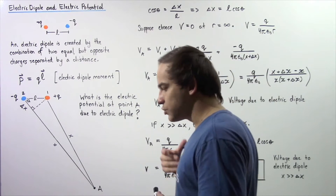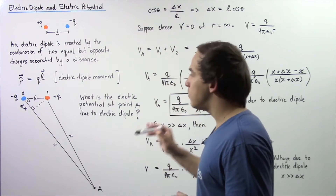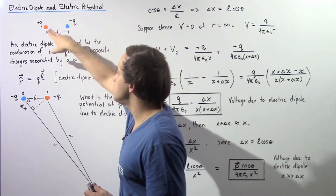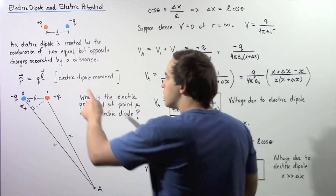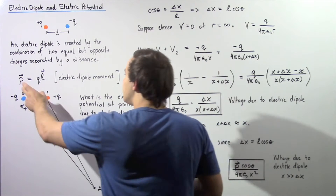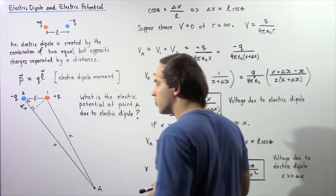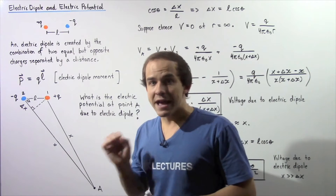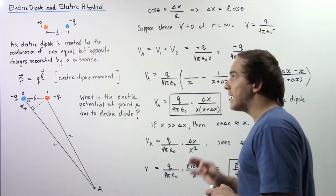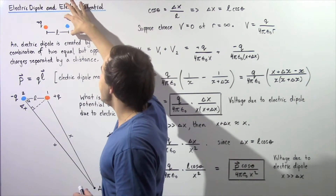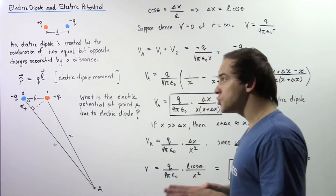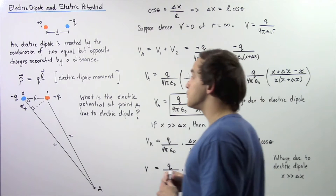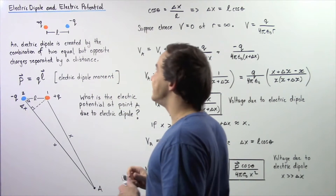Any time we have an electric dipole, we define the electric dipole moment as the product of the charge and the distance between the two charges. The electric dipole moment is denoted by a lowercase p and it is a vector, meaning it has magnitude as well as direction. In physics, the convention is that the dipole moment vector begins on the negative charge and ends at the positive charge. In chemistry, this convention is reversed — it begins on the positive charge and ends on the negative charge.